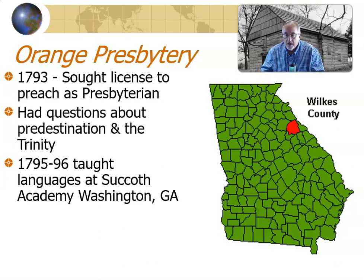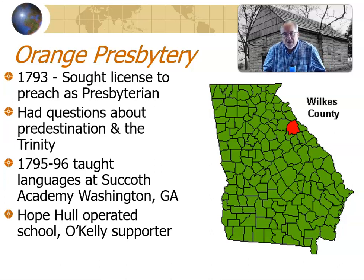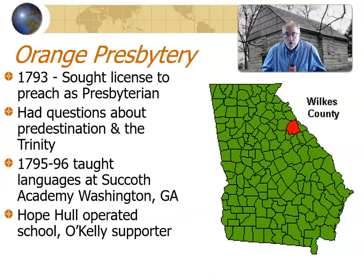If you ever get to the Cane Ridge Meeting House, be sure to go to the museum and look for that sermon. The other thing you'll see there is that Barton W. Stone was opposed to slavery, and there are some of his writings about that. In fact, his opposition to slavery will cause him eventually to leave Kentucky, where slavery was legal, and move to Illinois, where it was not.